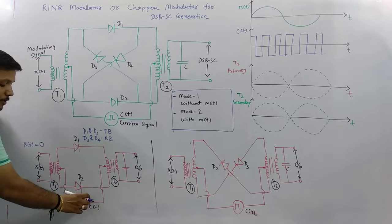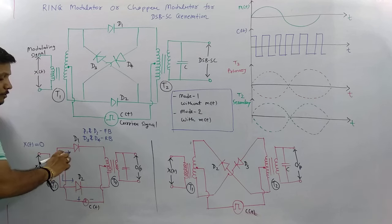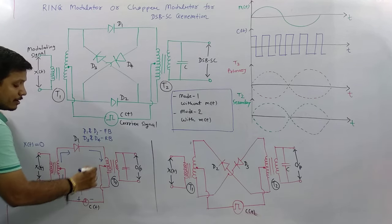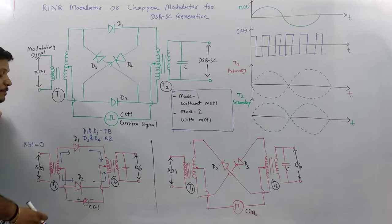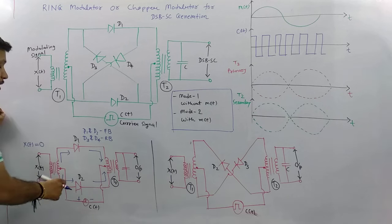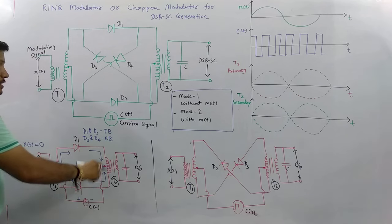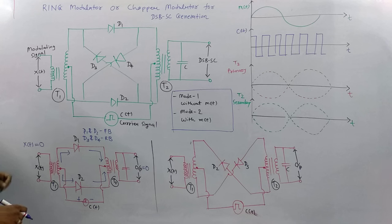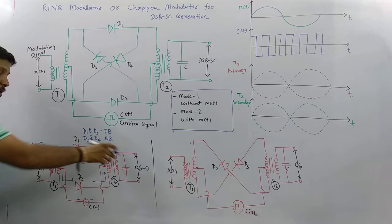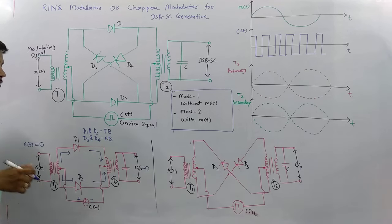Current flows from the carrier signal through D1 and through D2, and since this is a center-tap transformer the impedance is equal in both directions, so the magnitude of current is the same. These two currents cancel each other out, making the resultant output magnitude zero. So the carrier is getting suppressed ideally — even though the carrier signal is present, the output is zero.